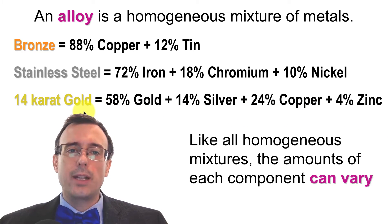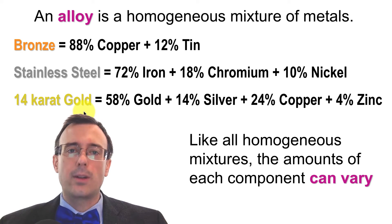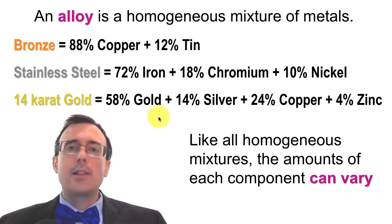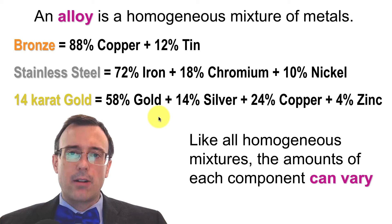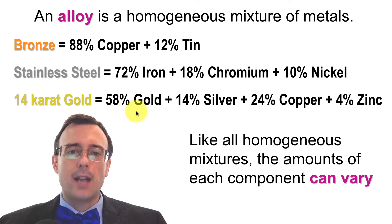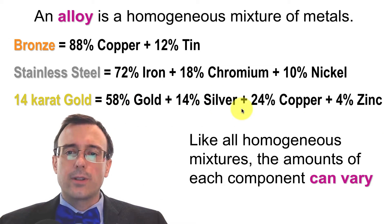24-karat gold is actually a pure metal — it's an element. However, anything less than 24-karat gold is going to contain a variety of different things, such as silver, copper, or zinc.